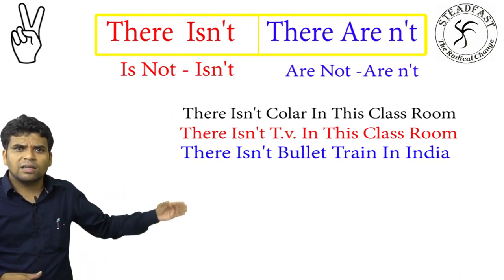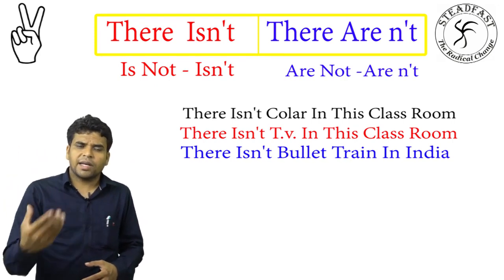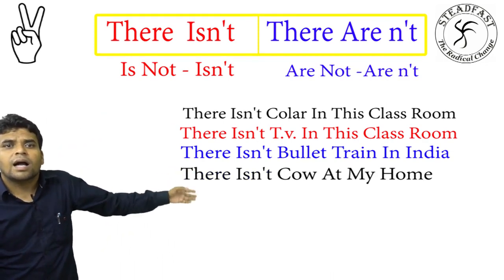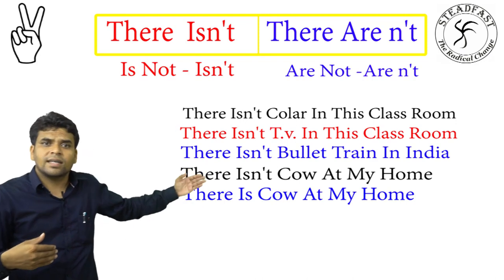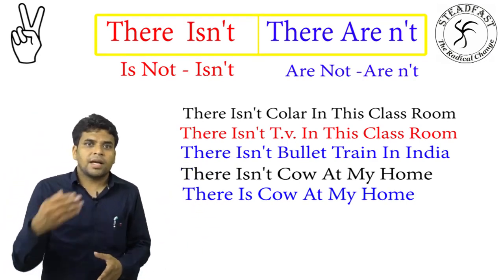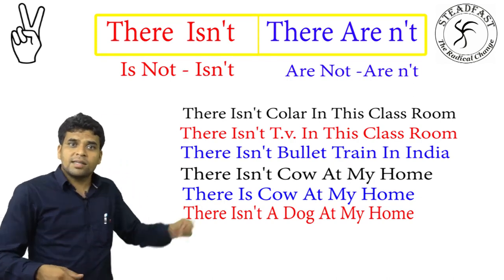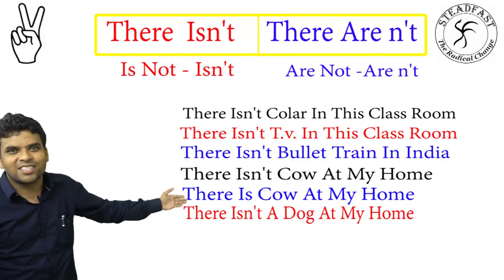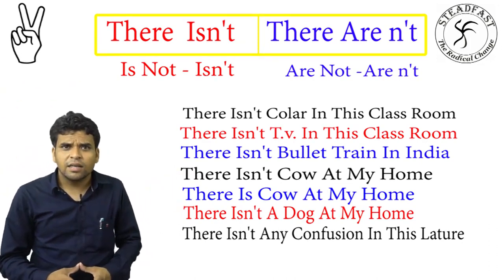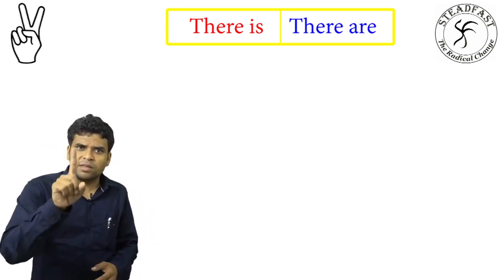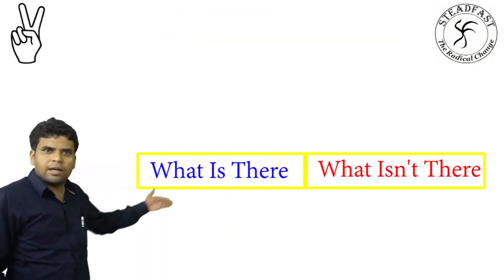There is a bullet train in India. There is a cow at my home. There isn't a cow at my home. There isn't a dog at my home. There isn't any confusion in this lecture. So, if somewhere there is one thing, use 'there is'; if there are many things, use 'there are'.